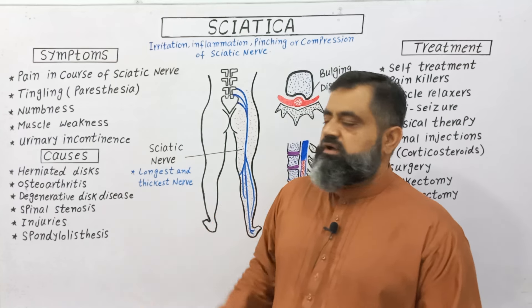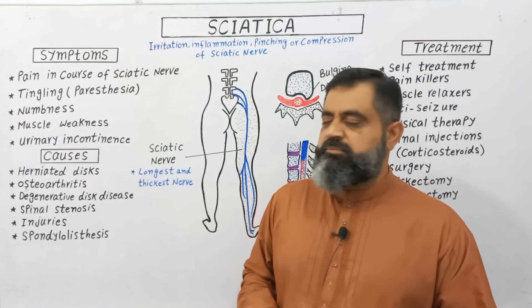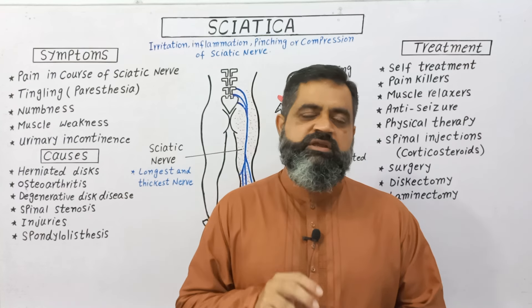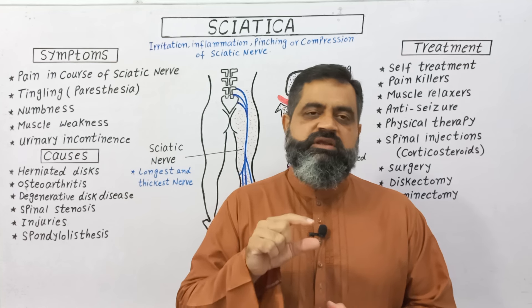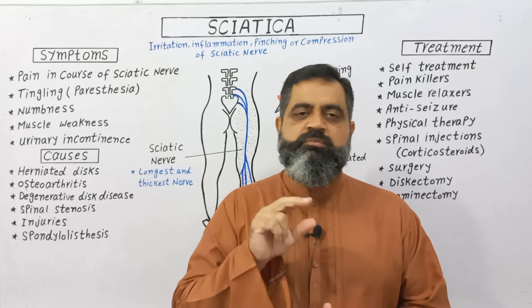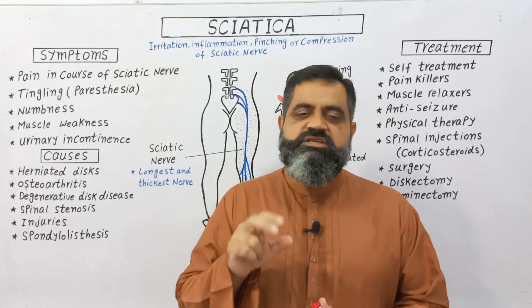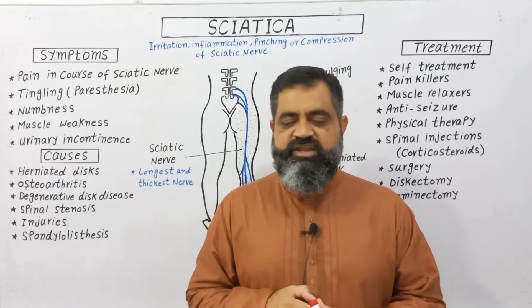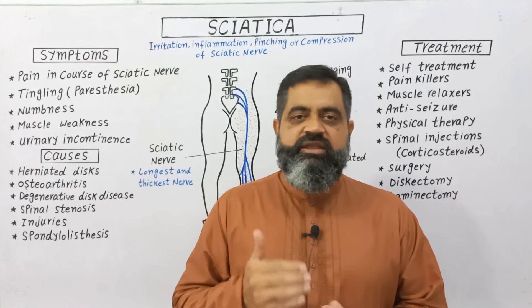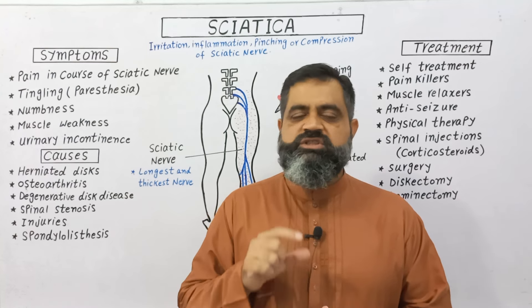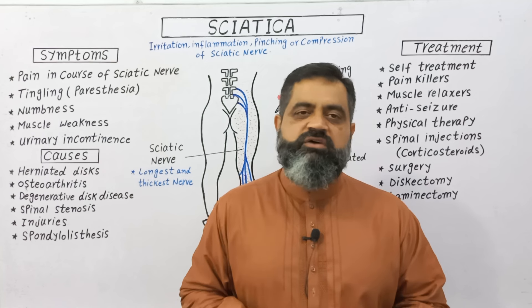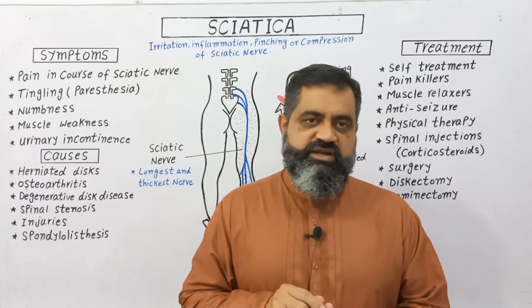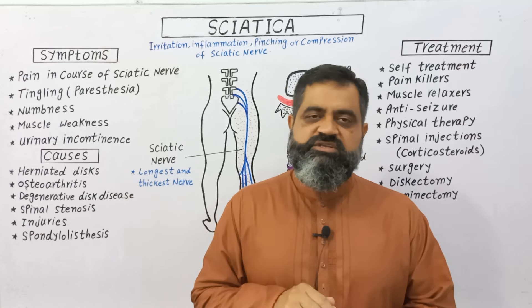Now we are going to look at the causes of sciatica. The main cause is a herniated disc. Our vertebral column is composed of vertebrae, and between every two vertebrae there is an intervertebral disc made of cartilage. This disc provides compressibility to the vertebral column. But sometimes due to heavy lifting, bending of the body, or degeneration of bone, this disc can slip out and compress the sciatic nerve, causing severe pain known as sciatica.